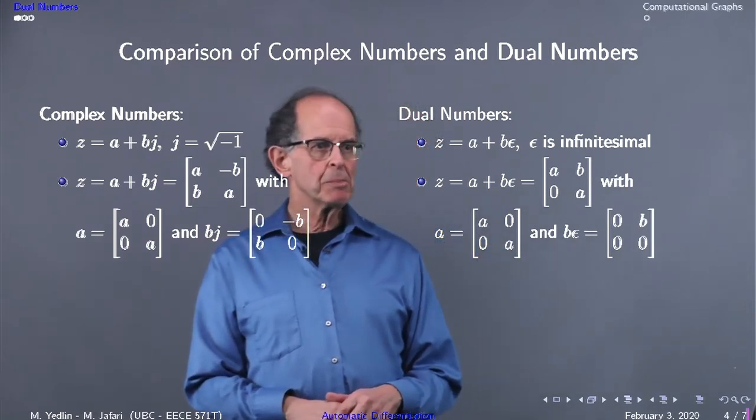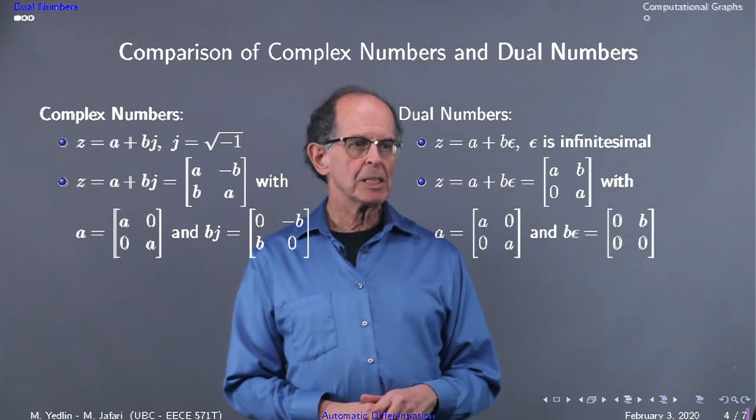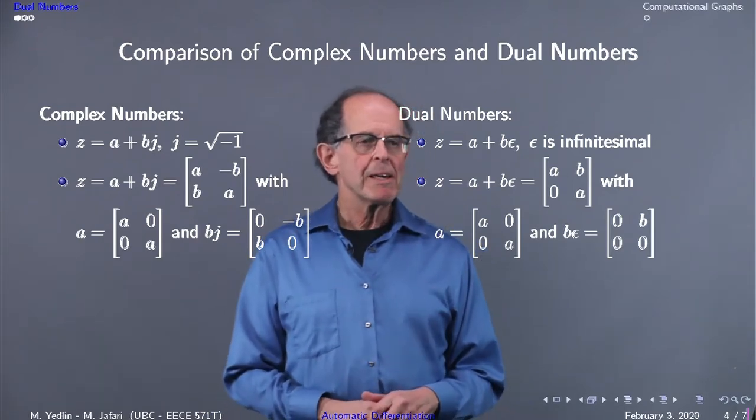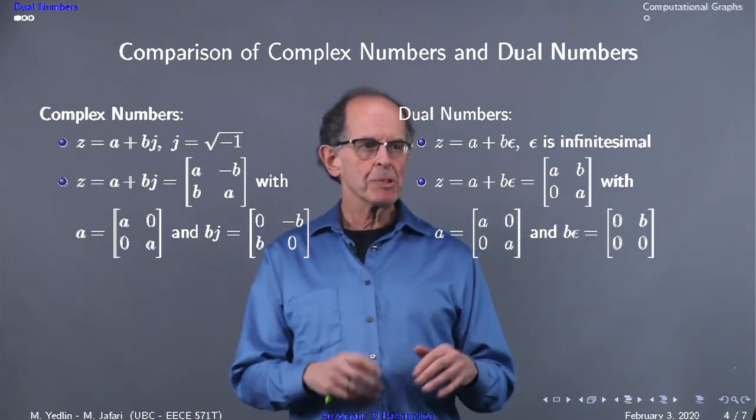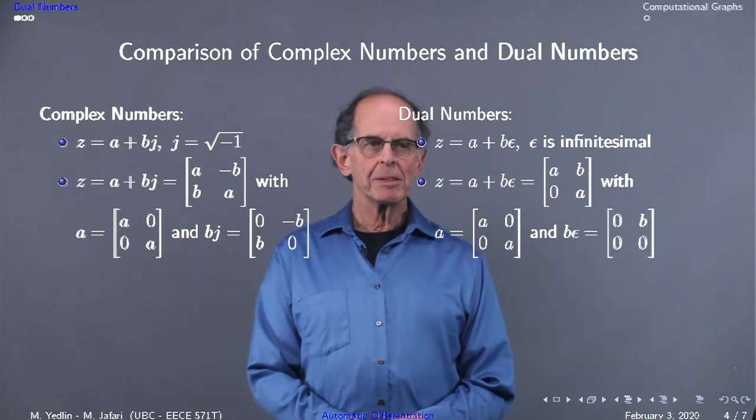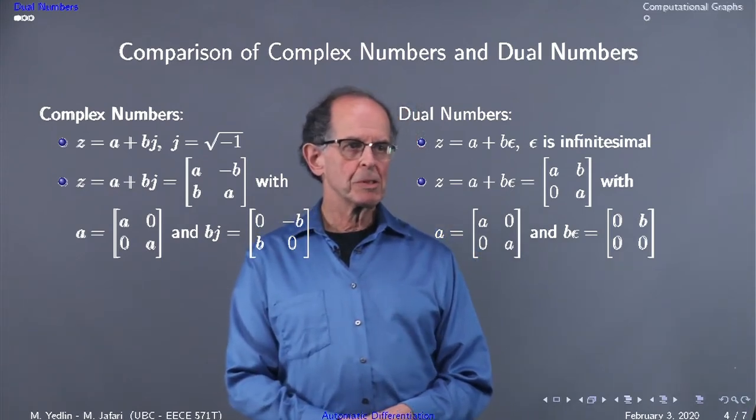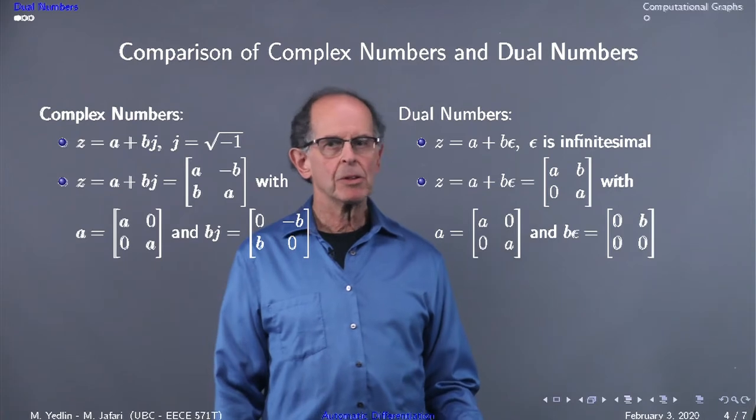For dual numbers, we have the same diagonal representation, but the epsilon part is represented by the matrix with zeros except b in the upper right-hand corner.